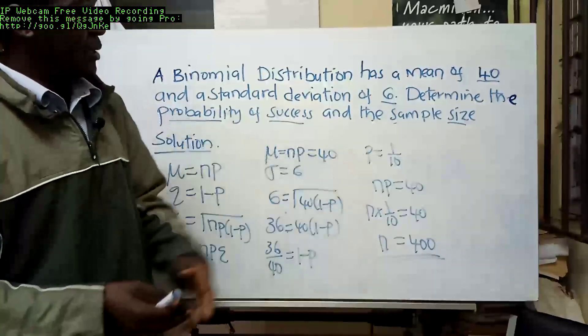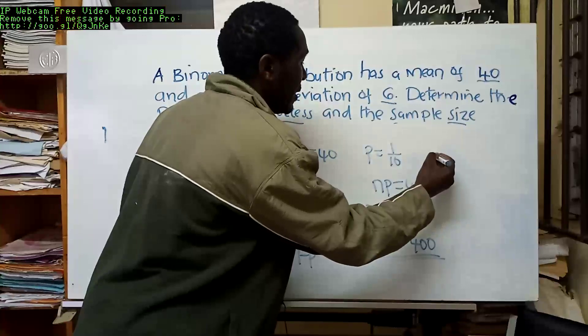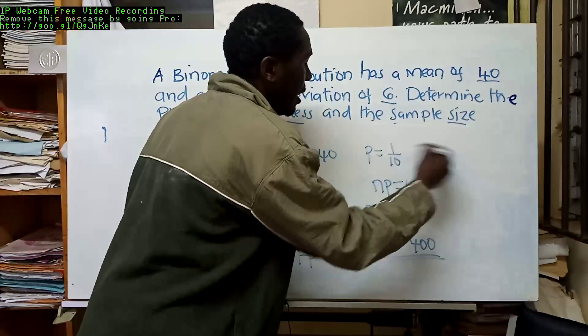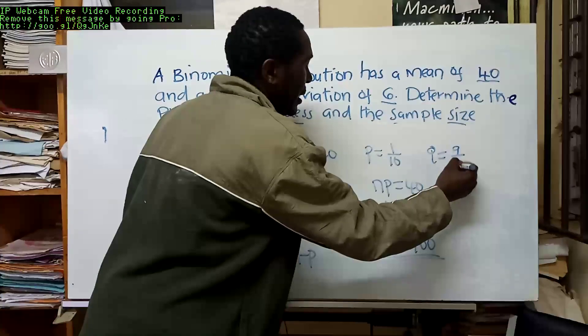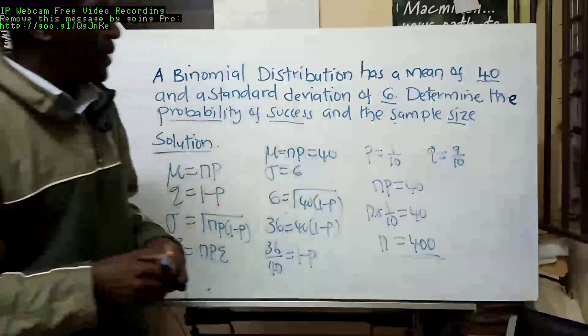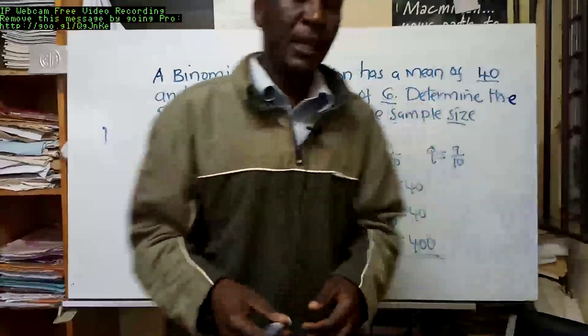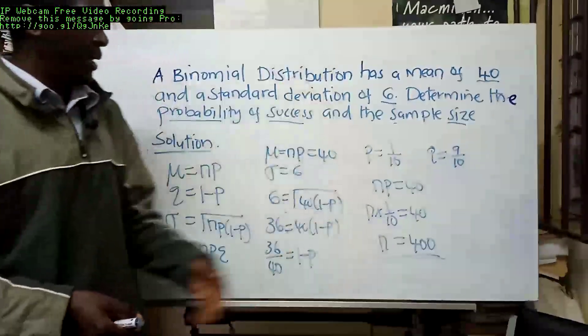So we have a sample size of 400 and the probability of success is 1 out of 10. This goes without saying that probability of failure, which is q, is equal to 1 minus that, which is 9 out of 10. And that's the end of the question. If there's any other query, then we can handle that one in future lessons.